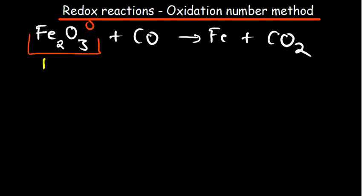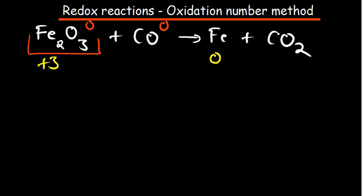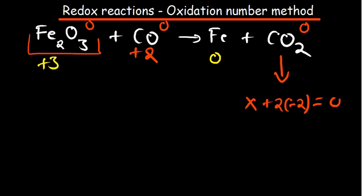So iron has a plus 3 oxidation state on the left. On the other side, since it exists in its elementary form, there's no charge — so it's 0. For carbon in carbon monoxide, let x denote carbon: x plus minus 2 equals 0, so x equals plus 2. For carbon in carbon dioxide, x plus 2 times minus 2 equals 0, giving us x equals plus 4.